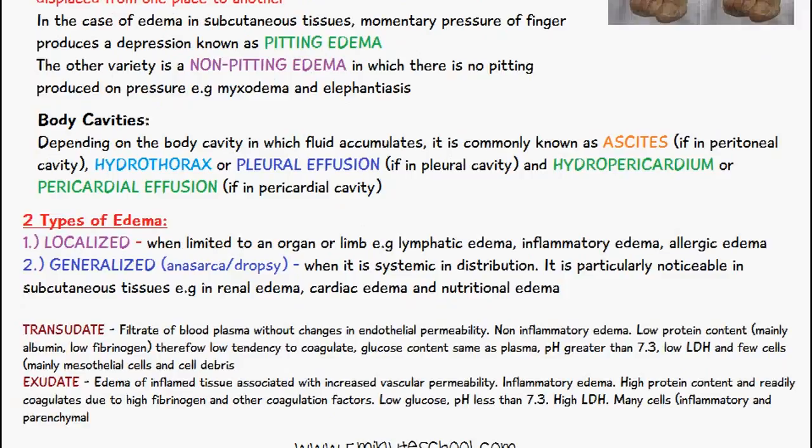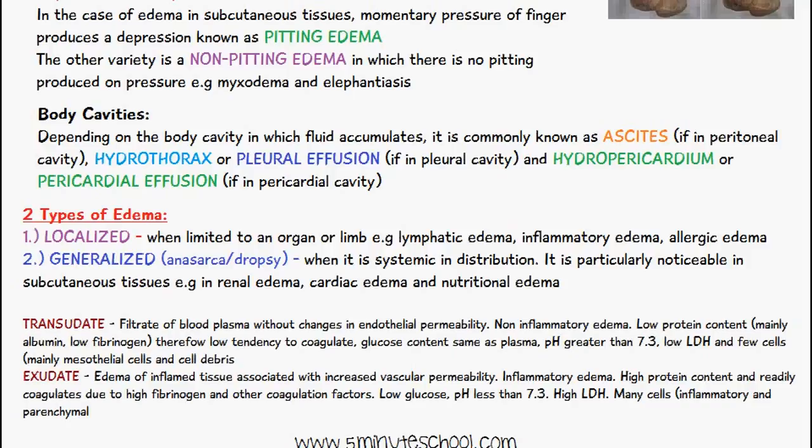You have two types of edema: localized or generalized. Localized means it's limited to an organ or a limb — examples include lymphatic edema, inflammatory edema, or allergic edema. Generalized edema, otherwise known as anasarca or dropsy, is systemic in distribution and is quite noticeable in subcutaneous tissues. Examples include renal edema, cardiac edema, and nutritional edema.